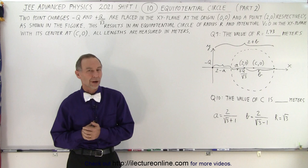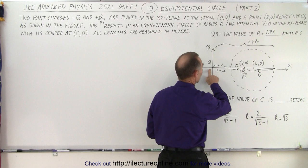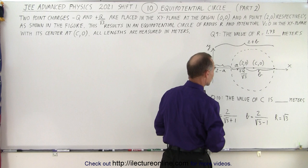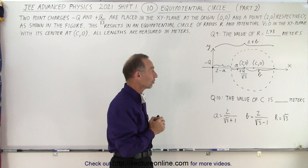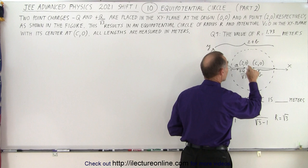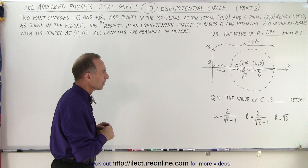Welcome to I'd Lecture Online, and now on to part 2 of this interesting problem. The same problem again, where we had a charge negative Q at the origin, we had a second charge 2 meters away on the x-axis, that charge is positive Q over the square root of 3. We end up in an equipotential circle, and in the previous video we found the radius of that circle. Now we're supposed to find the center of that circle, where is C located on that axis.